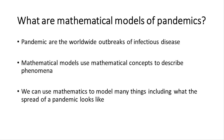Mathematical models essentially use lots of different mathematical concepts to describe real-world phenomena. We can use mathematics to model what the spread of a pandemic looks like. In particular, we can understand how different factors — such as properties of the population in question or the infection in question — contribute to the spread of the pandemic, including the speed of how it spreads and the total size of the pandemic.